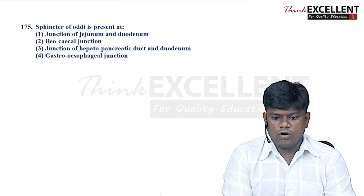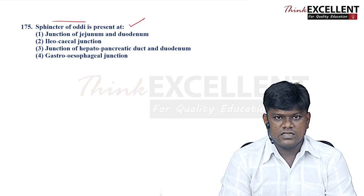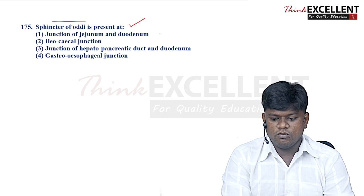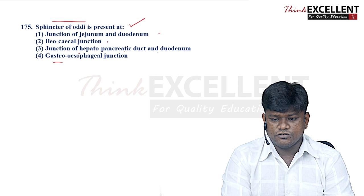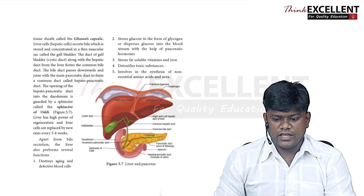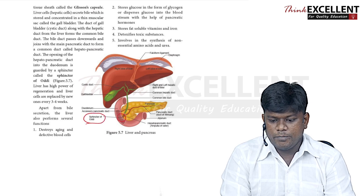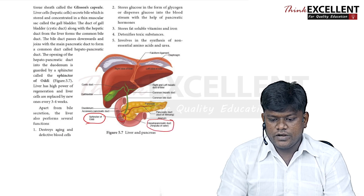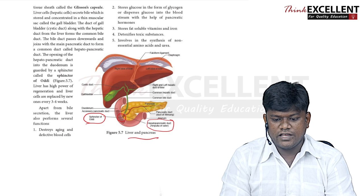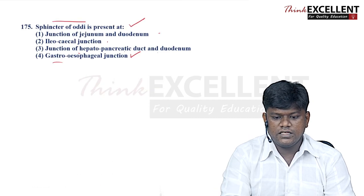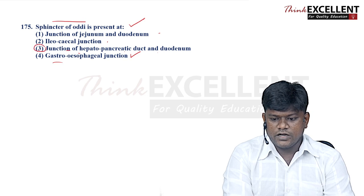Question 175: Sphincter of Oddi is present at the connection between structures of the liver and pancreatic duct. This evidence is present in the state board syllabus. Option 3 — the junction of the hepatopancreatic duct and duodenum — is the right answer.